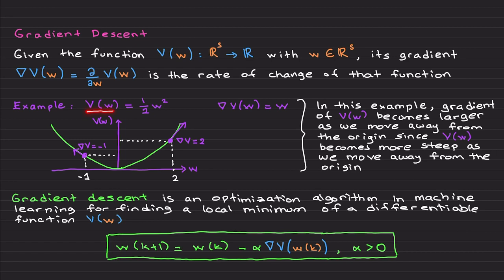Let's consider a simple example. Let's say our function is one-half w squared. In this case, the gradient is: if you take the partial derivative with respect to w, you get one-half times two w — the twos cancel and you get w. So for example, if you plot this function with a blue line, at point two the gradient is two, and at point one the gradient is one.